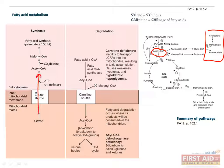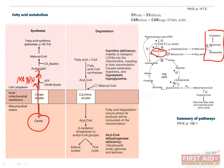The first step in fatty acid synthesis is transporting acetyl coenzyme A from the mitochondria to the cytoplasm using the citrate shuttle, which also creates NADPH. Next, the 2-carbon acetyl coenzyme A is carboxylated to the 3-carbon malonyl coenzyme A, which requires the enzyme acetyl coenzyme A carboxylase, and like most carboxylation reactions, also requires biotin as a cofactor.